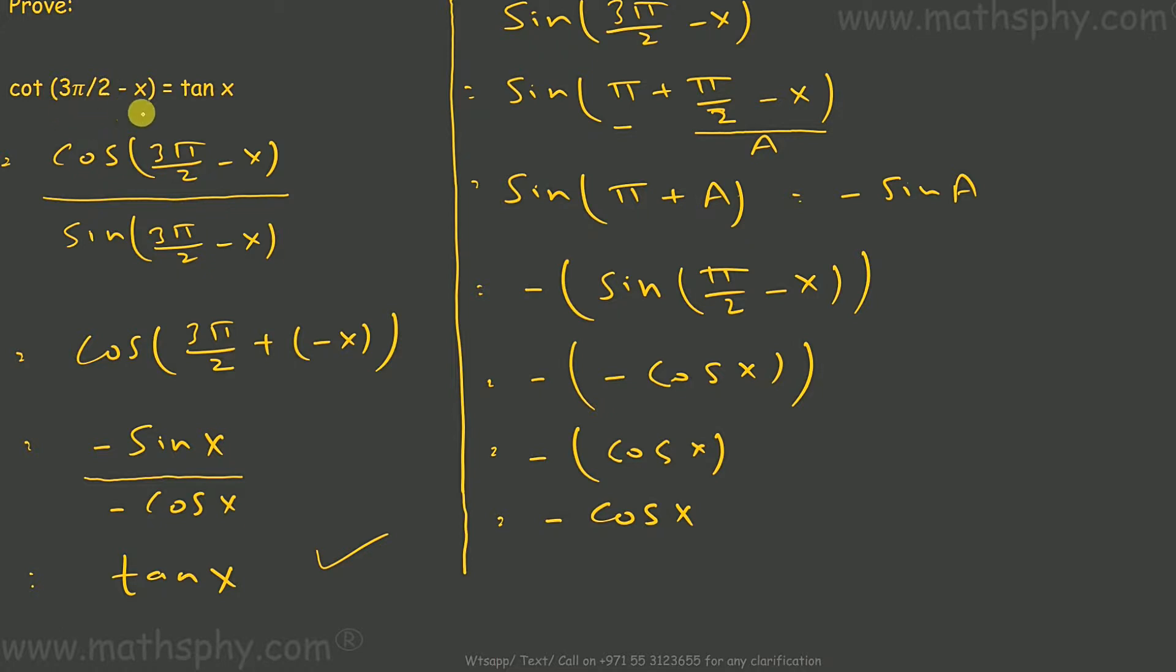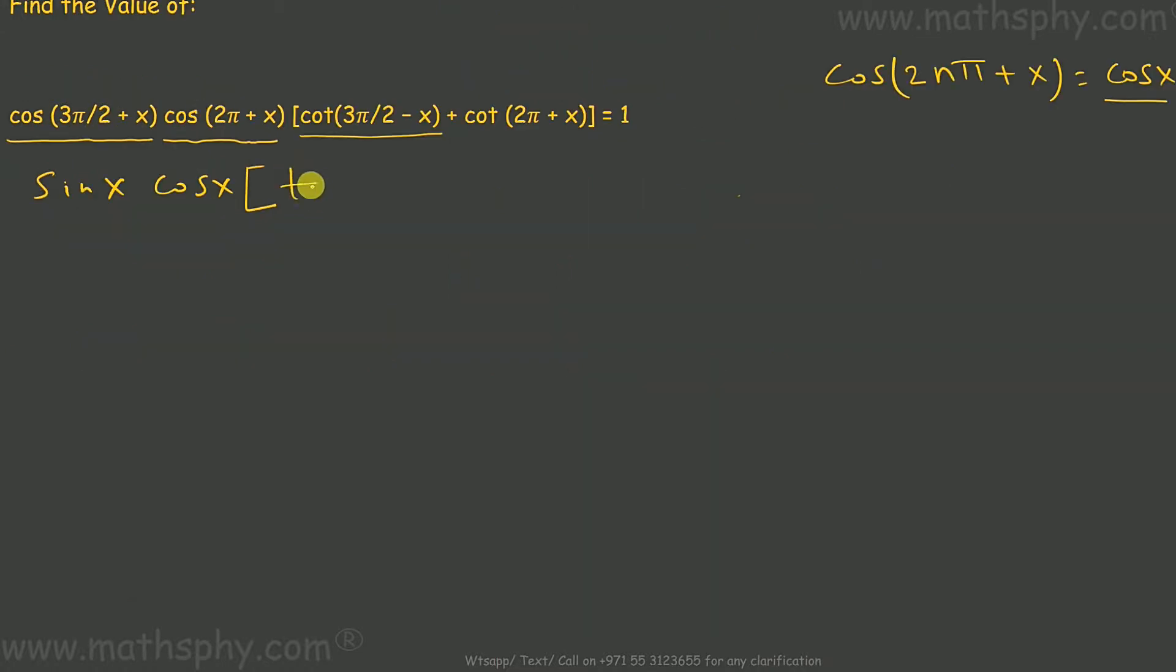Cos(3π/2 - x) equals to tan x. This will be tan x, plus this can be cos(2π + x) over sine(2π + x). We can write this.